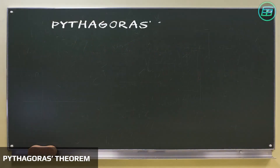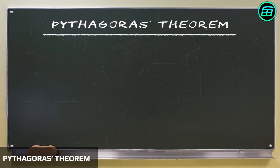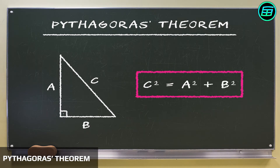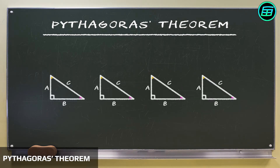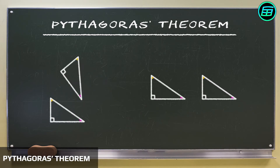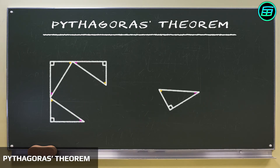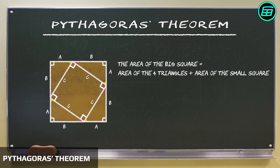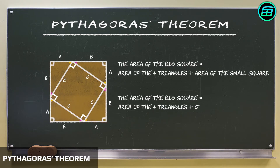What is the simplest way to prove Pythagoras' Theorem? As you know, in a right-angled triangle, the square of the hypotenuse equals the sum of the squares of the other two sides. If we start with 4 identical right triangles and place them like this, we get a large square and a small square inside it. The area of the large square is 4 triangles' area plus this small square's area.